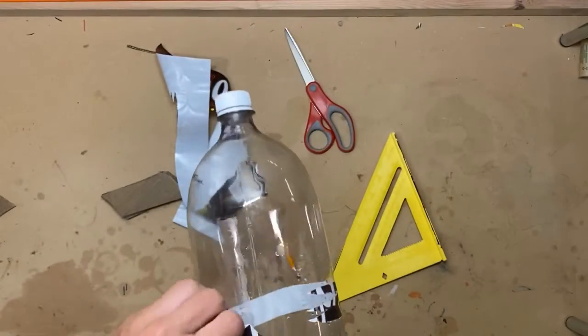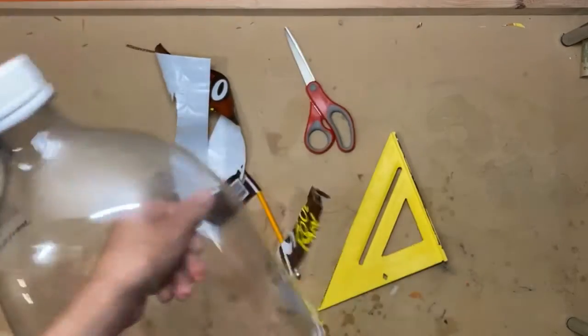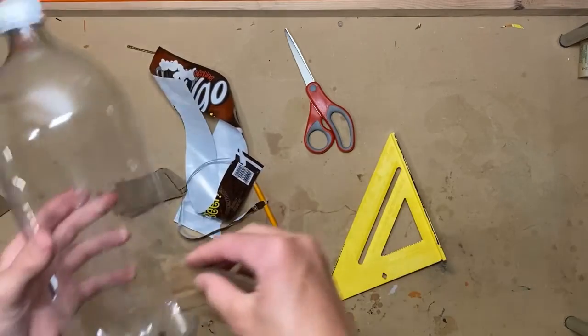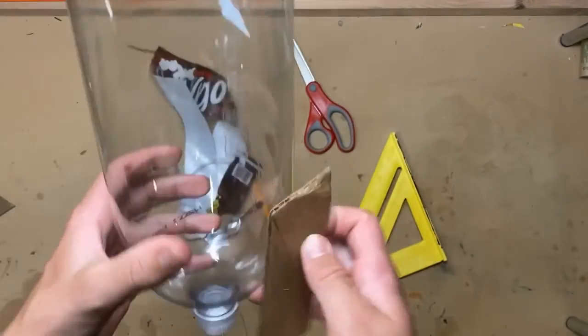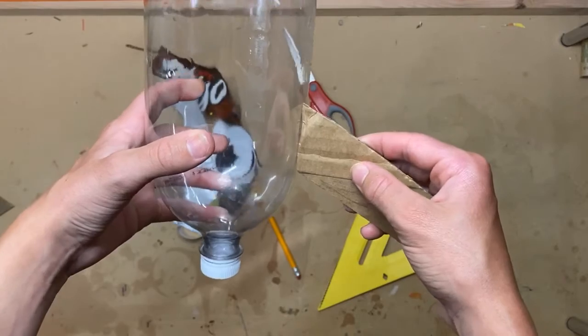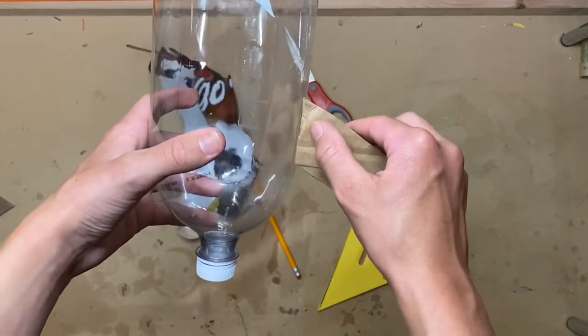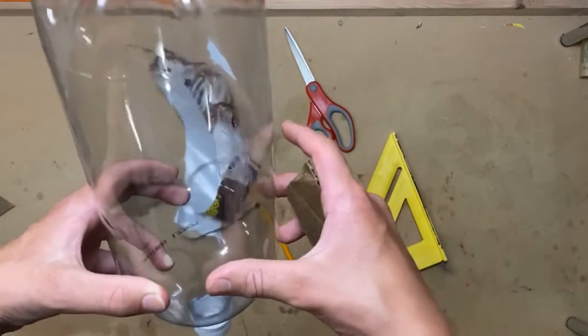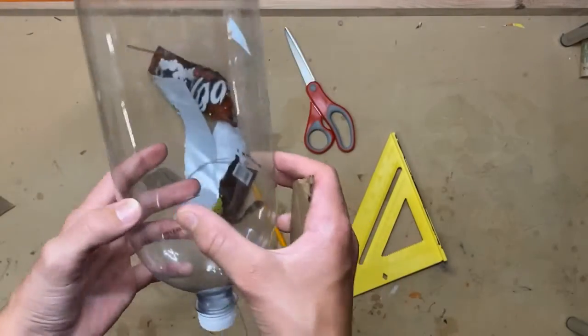take your fins and some duct tape, and tape your fins on, just like this, with the cap on the bottom, like this, with a piece of tape here, and then on the other side, so that it wraps onto the 2-liter bottle.